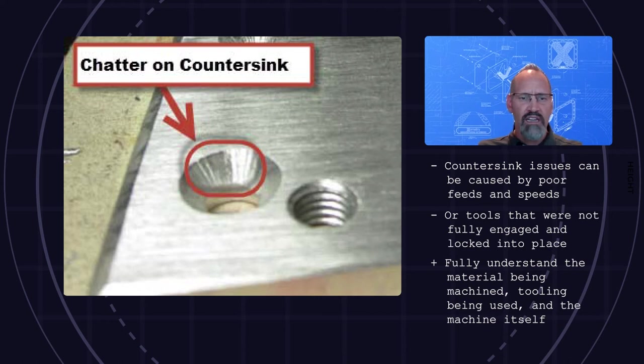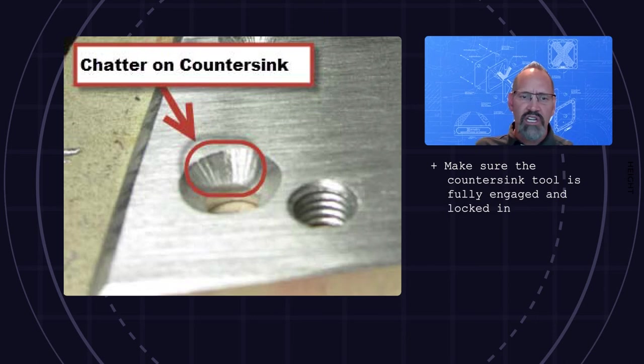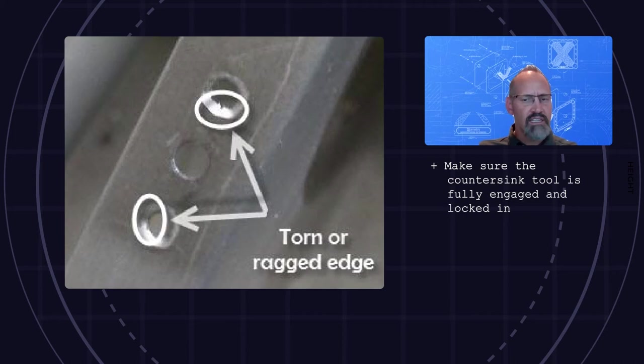To avoid these non-conformances, be sure to fully understand the material being machined, the tooling being used, and the machine itself. Also be sure the countersink tool is fully engaged and locked into the holder properly. In all cases, consider testing the tooling and adjusting feeds and speeds on separate pieces of material.